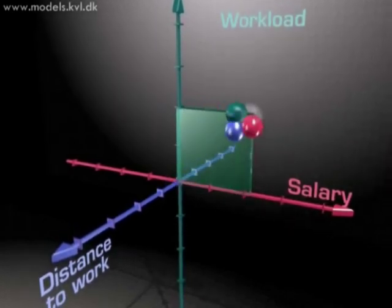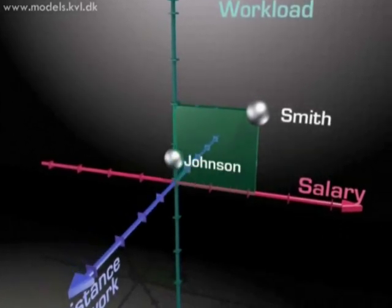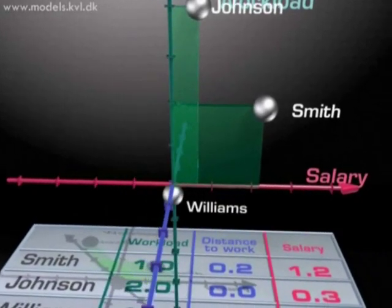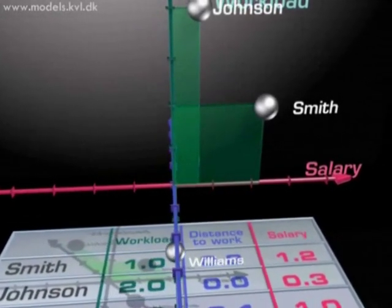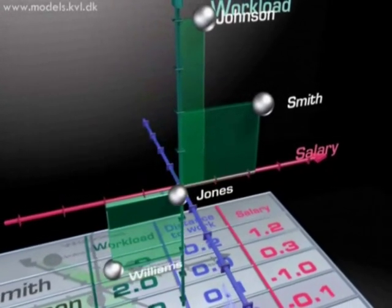So every sample, Smith here, becomes a point in this three-dimensional coordinate system. And we can add all the other samples in the coordinate system. And each of them will be represented by a point. And we can read the original three measurements from this coordinate system.